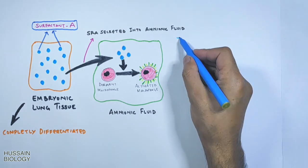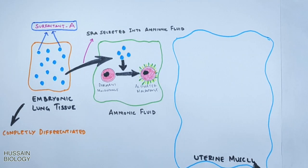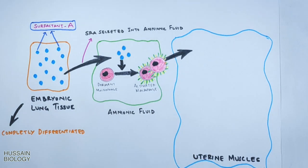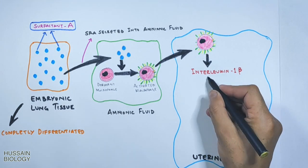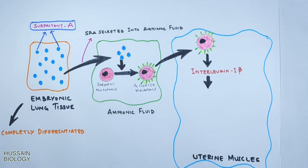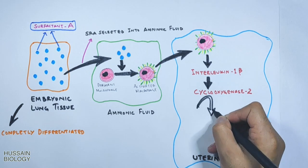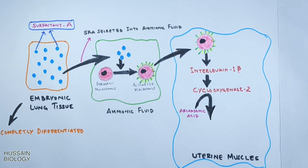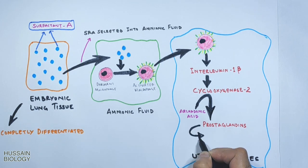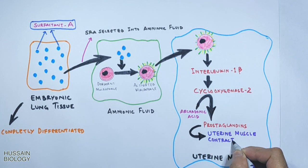We now have activated macrophages. On the right we have the uterine muscles, and the recently activated macrophages migrate to the uterine tissue where they secrete interleukin-1 beta (IL-1β). In turn, IL-1β stimulates the production of cyclooxygenase-2 (COX-2), an enzyme that generates prostaglandins from the fatty acid arachidonic acid. These prostaglandins are responsible for initiating uterine muscle contractions and labor.